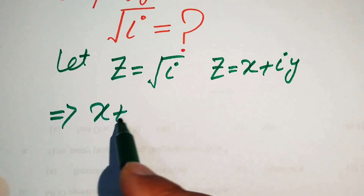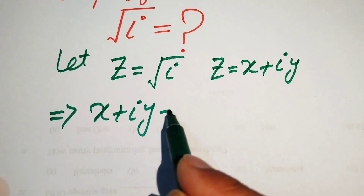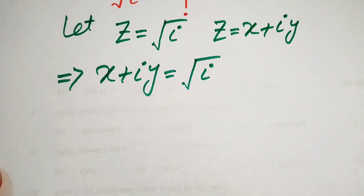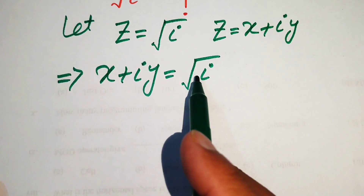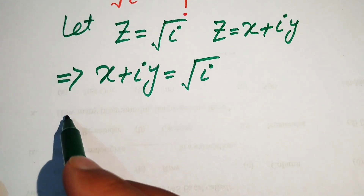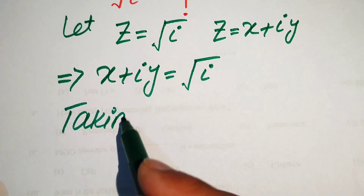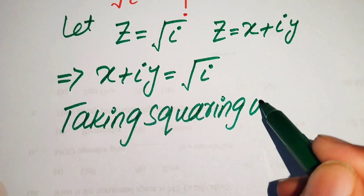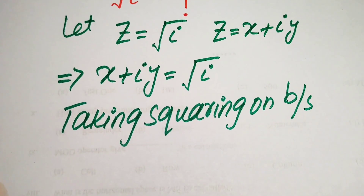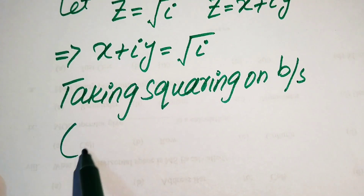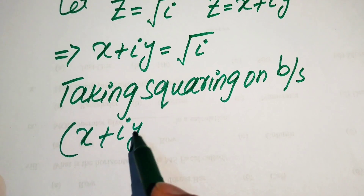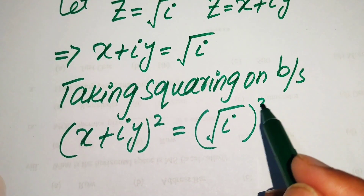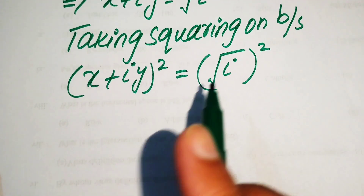We substitute z equals x plus iota y, so it is written as x plus iota y equals the square root of iota. To eliminate the square root sign on the right-hand side, we take squaring on both sides, giving us x plus iota y whole squared equals iota squared — and the square root signs are gone.